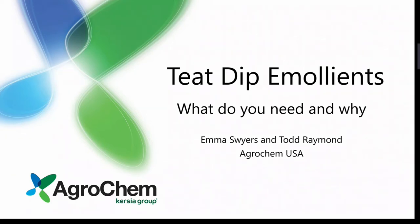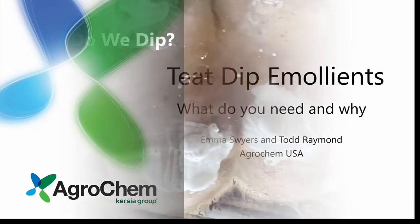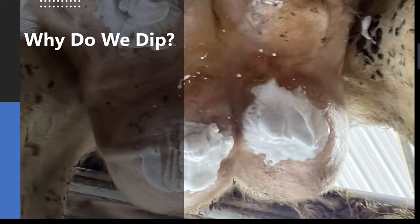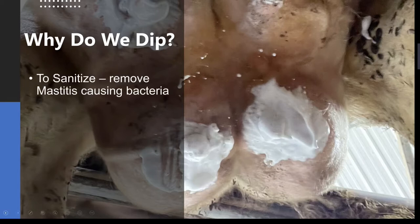We're all here to take a look at the TTIP emollients, understand a little bit more about how they fit in and what we're doing. So why do we dip? The main reason is to sanitize, remove that bacteria to prevent any mastitis, clinical and subclinical. We don't want to see our cows go past that 200,000 mark where we start to lose money, and we definitely don't want to see an increase in mastitis cases.